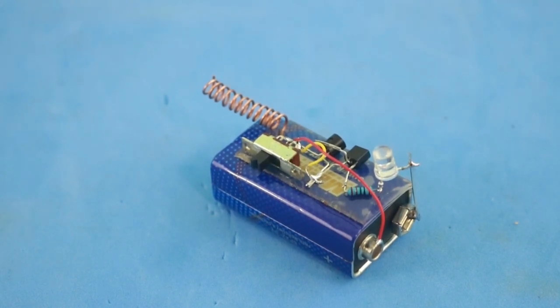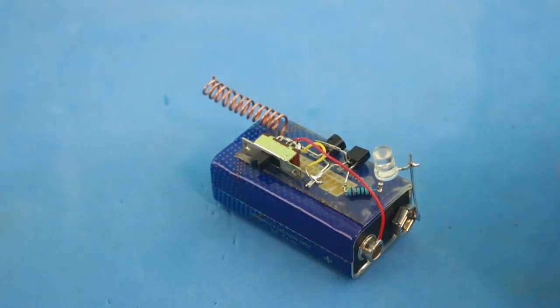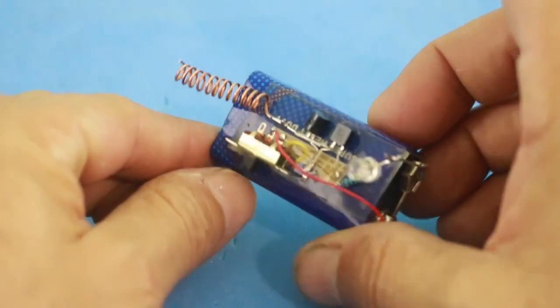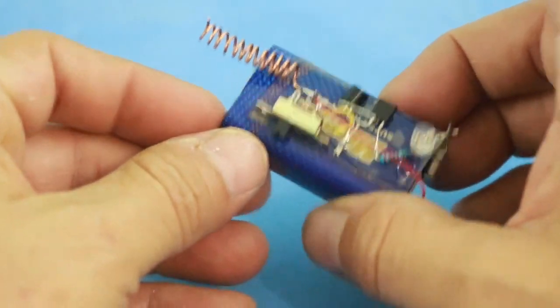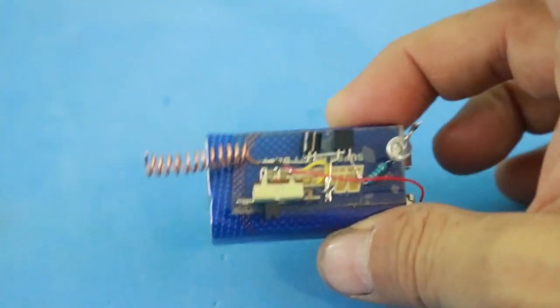Hello, welcome to Ludic Science. In this video I will show you how to make this super simple circuit to check for the presence of an alternating current in a wire without direct contact.